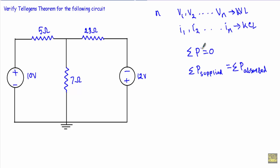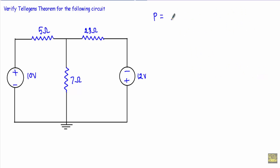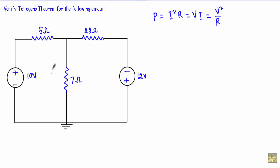If I can show that the sum of total powers is equal to zero, or that supplied power equals absorbed power, then I can say Tellegen's theorem is verified. To calculate power in a DC circuit we normally use the formulas: P = I²R, P = VI, or P = V²/R. All these quantities are associated with current, voltage, or resistance, so I have to calculate the voltage and current in the circuit. Since resistor values are given, I will apply mesh analysis to calculate the current through each element.